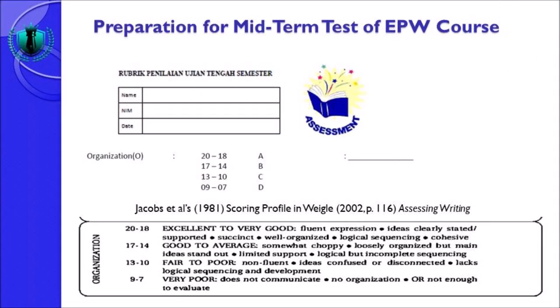Unsur kedua adalah organization, juga sama ada A, B, C, D tapi rentang nilainya berbeda. 18-20 adalah A, 14-17 adalah B, 10-13 adalah C, 7-9 adalah D. Nilai terendah 7, nilai tertinggi 20 untuk komponen organization. Untuk excellent to very good, indikatornya: fluent expression, ideas clearly stated or supported, succinct, well organized, logical sequencing, and cohesive. Fluent expression maksudnya susunan tulisannya ekspresinya mahir tidak tersendat-sendat, idenya jelas dinyatakan atau didukung, succinct berarti tepat, well organized, serta logical sequencing dari awal sampai akhir, dan cohesive ada penggunaan transition di dalam tulisan.